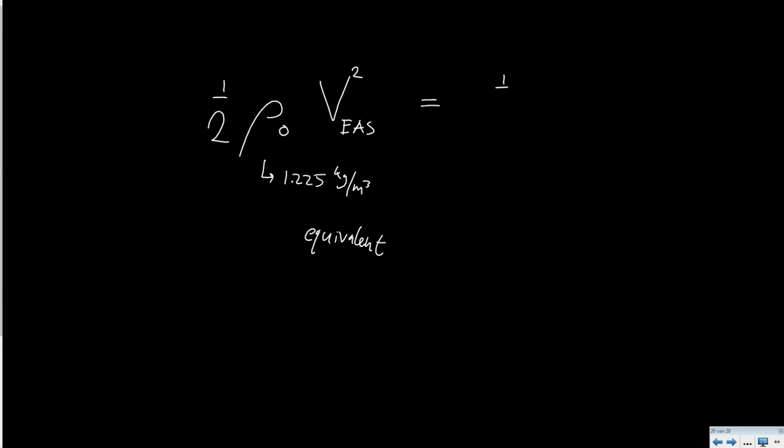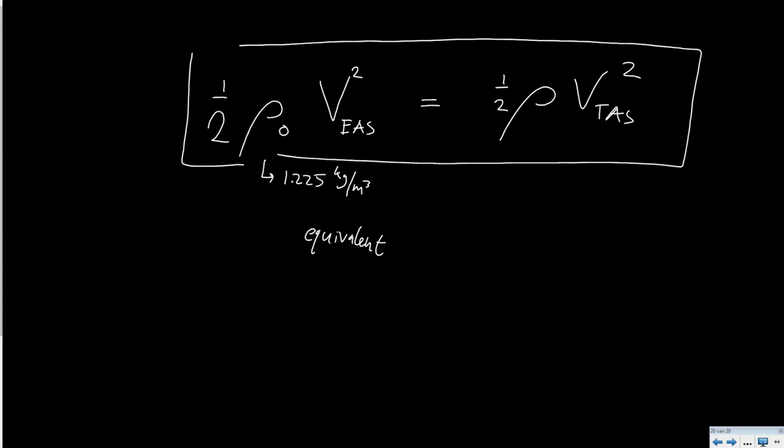But in reality we know that if we want to know the true air speed we should have taken the real density. Well this relation is an important relation because it shows the difference between what is being shown, the equivalent air speed, and what it really is, the true air speed. And it also shows how you can change one in the other.